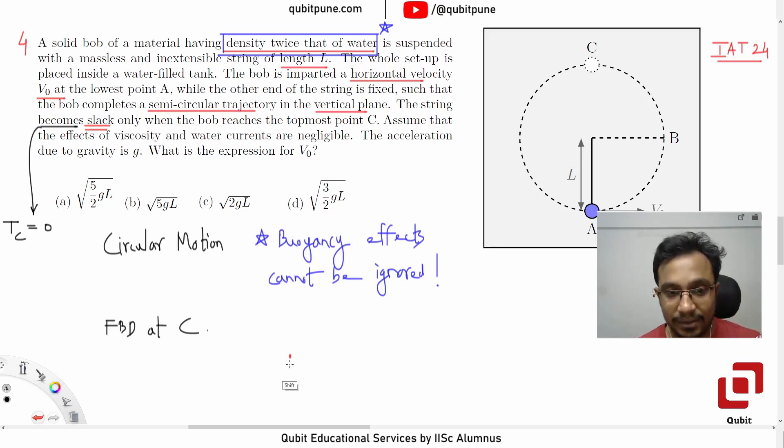First one is its weight. First one is its weight is MG. And what will be the magnitude of the buoyant force? Can anyone tell me that? Will it not be MG by two?